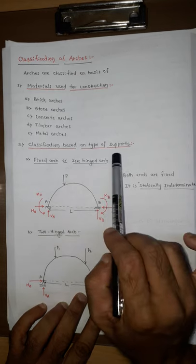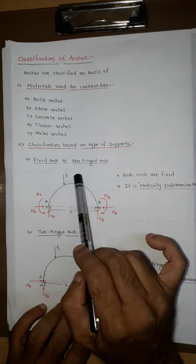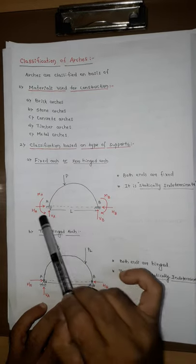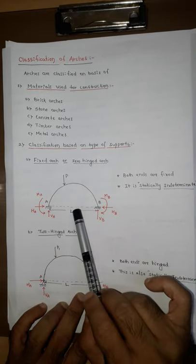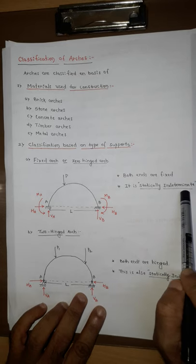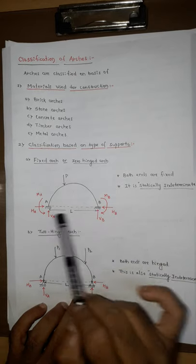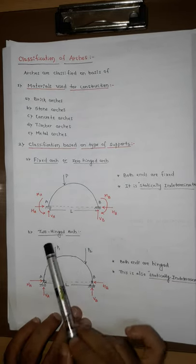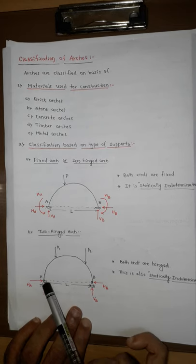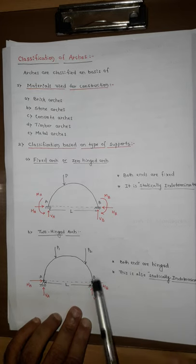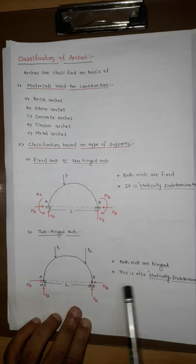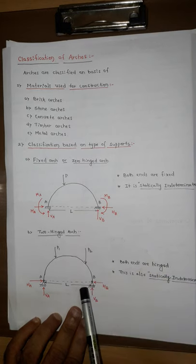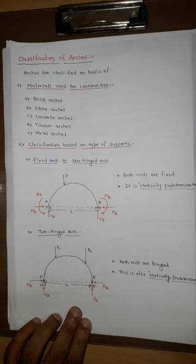The second factor for classification is the type of supports provided for the arch. The first type is a fixed arch, also called a zero-hinged arch — both supports A and B are fixed. An important observation is that the fixed arch is statically indeterminate, meaning equilibrium equations alone are not sufficient to find the unknown reactions. Similarly, the two-hinged arch has hinges at support A and support B, and it is also statically indeterminate.